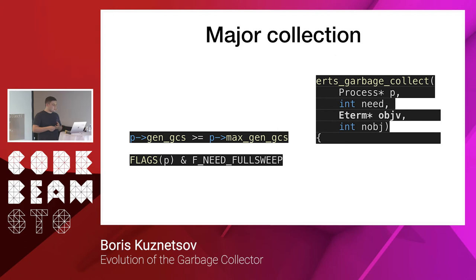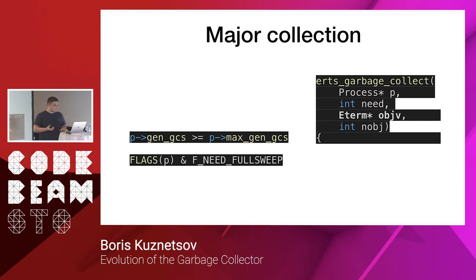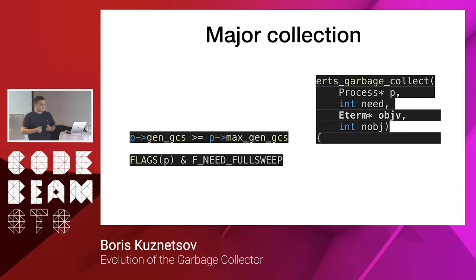Specifically it uses a same-space generational garbage collector. When you hear the word 'generational', it refers to the way we track young objects and mature objects. We have a major collection which will be called if we force a major collection by setting the flag 'need_full_sweep', but it will also be called after the limit of minor collections. The current limit of minor collections is around 65,000 — so after 65,000 minor collections, a major collection will happen.